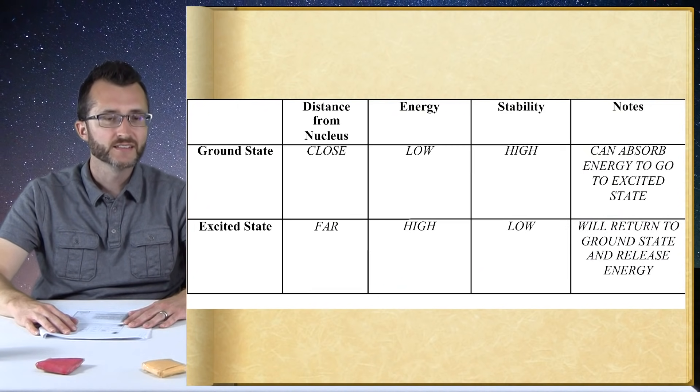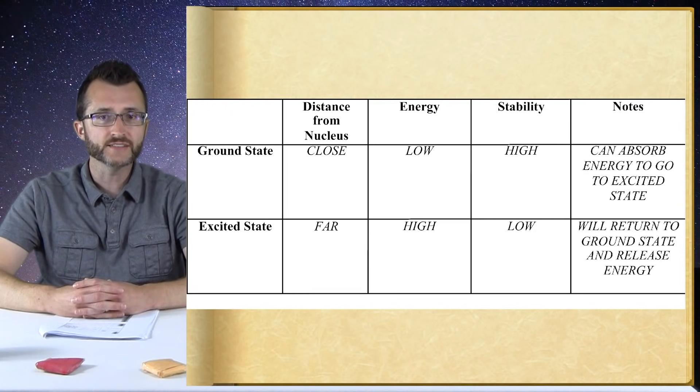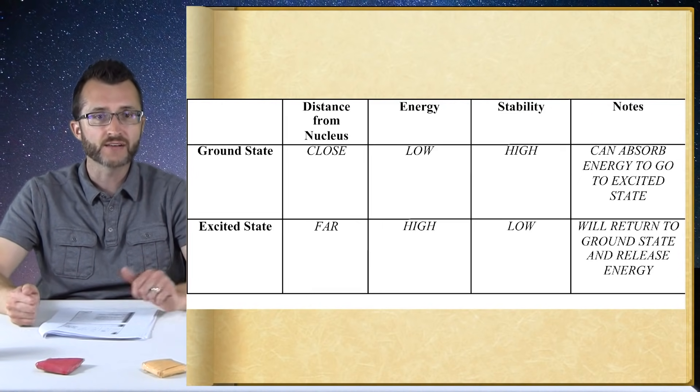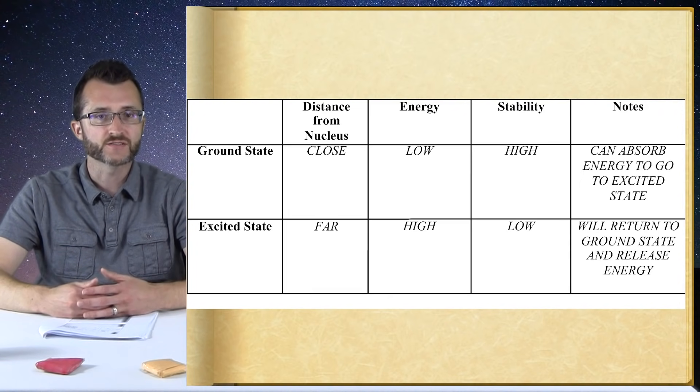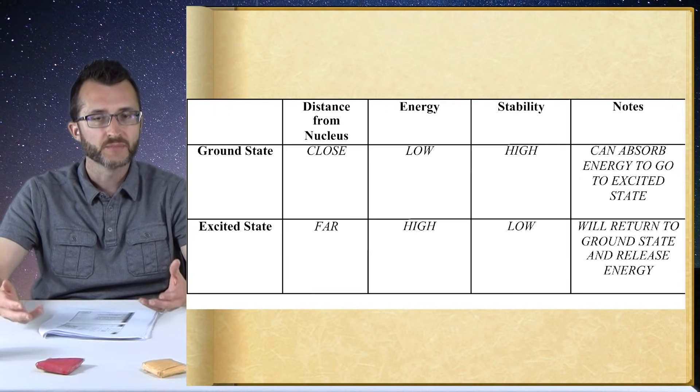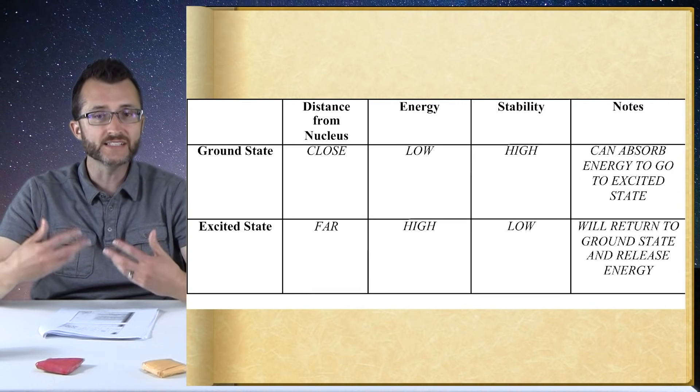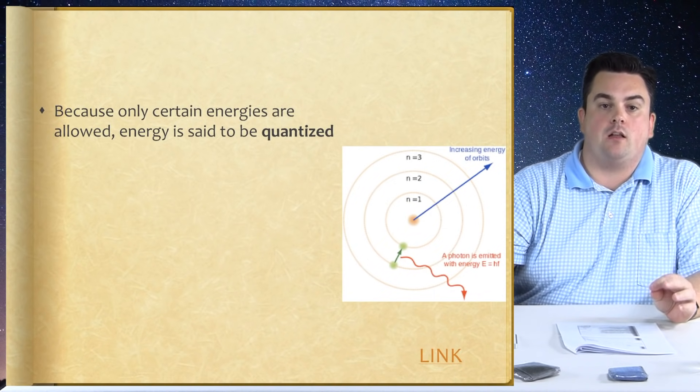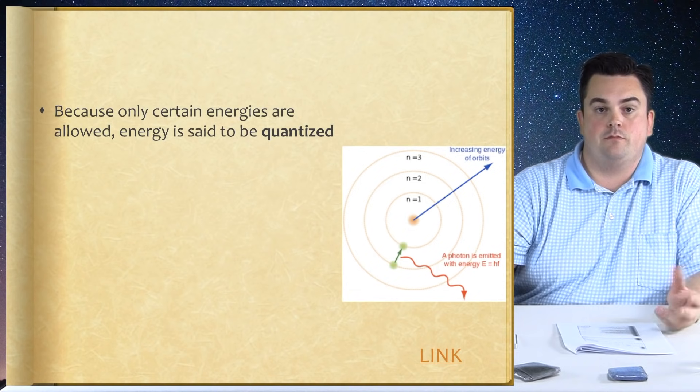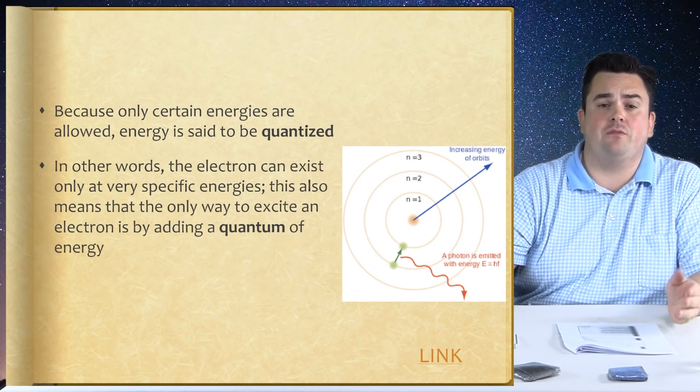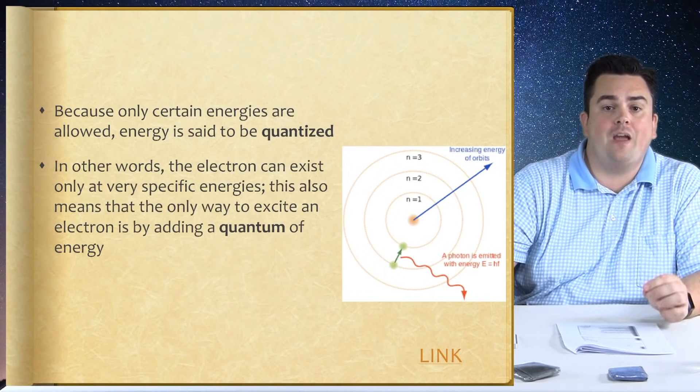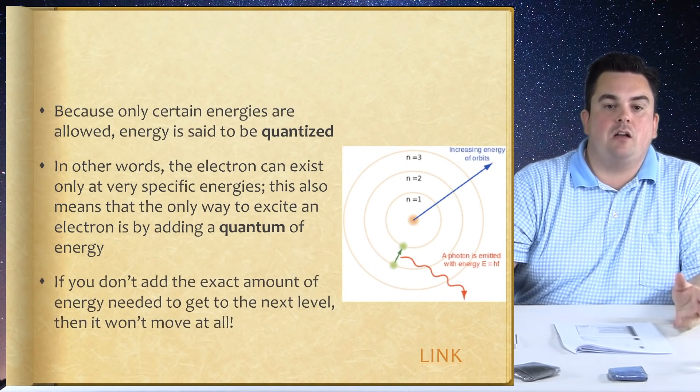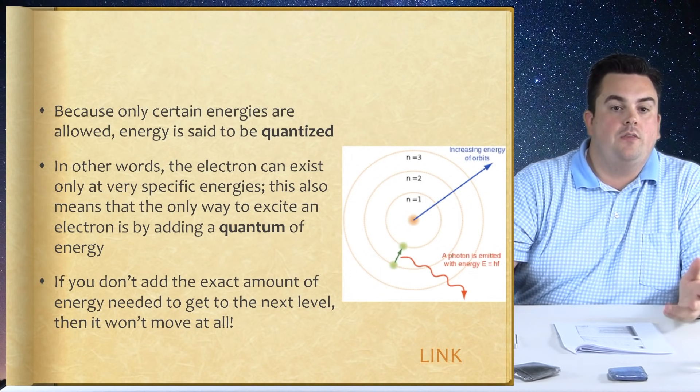Putting some things together. In the ground state, we are very close to the nucleus. We are at a very low energy, but high stability. We can absorb energy to go to the excited state from the ground state. Once in the excited state, we are far in distance from the nucleus. We are at a high energy, but a very low stability. And that low stability would lead to the electron returning to the ground state and releasing energy. Because only certain energies are allowed, energy is said to be quantized. In other words, the electron can exist only at very specific energies. This also means that the only way to excite an electron is by adding a quantum of energy. If you don't add the exact amount of energy needed to get to the next level, then it won't move at all.